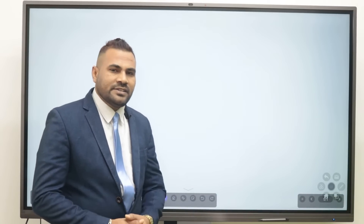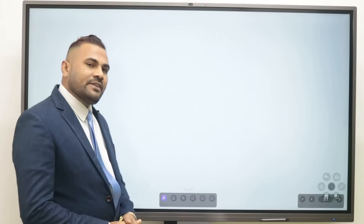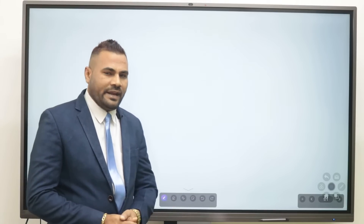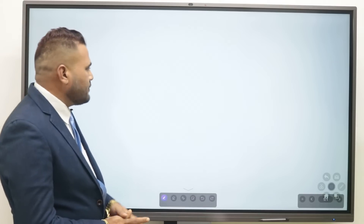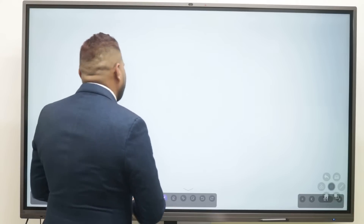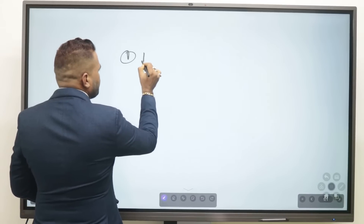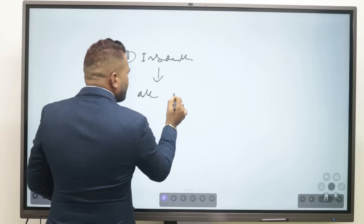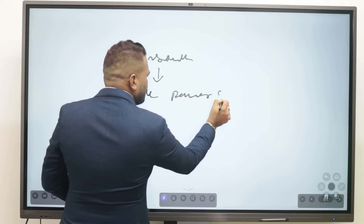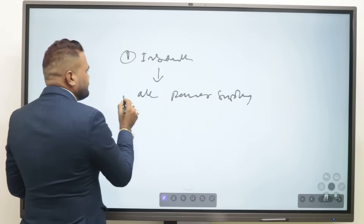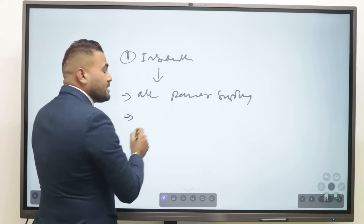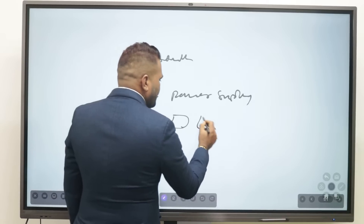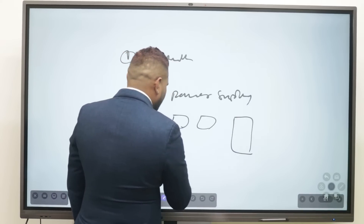When we go for the installation of any VRV and VRF system, after the installation we need to do the addressing. First, we complete the installation. Second, we ensure all power supply is connected. Then, after the power supply, we make all connections between the indoor units and outdoor units and complete all the addressing.